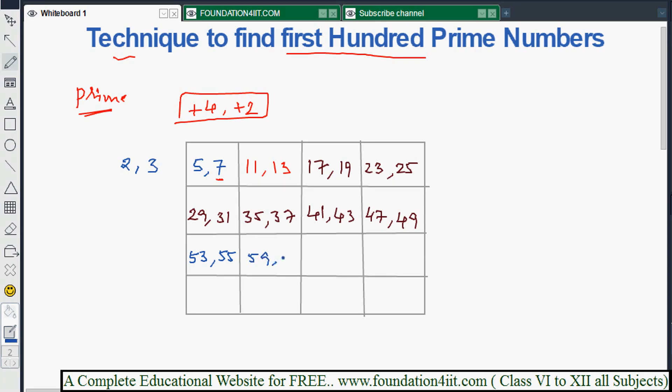Continue: 43 plus 4 is 47, plus 2 is 49. Then 53, 55. Then 59, 61. Then 65, 67. Then 71, 73. Then 77, 79. Then 83, 85. Then 89, 91. Then 95, 97. 97 plus 4 is 101, which is more than 100, so we stop here.